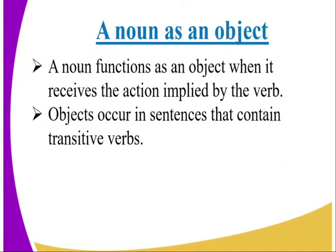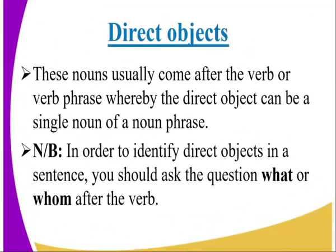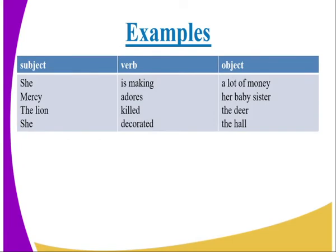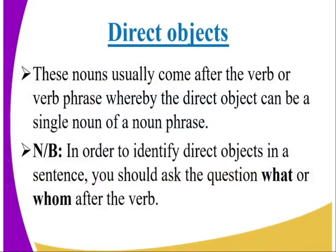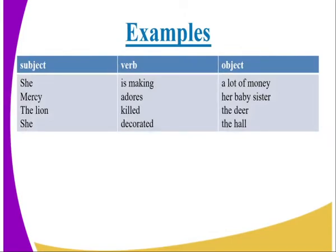A noun functions as an object when it receives the action implied by the verb. Objects occur in sentences that contain transitive verbs. Types of objects: we have the direct and the indirect object. Direct objects come after the verb or verb phrase, and can be a single noun or a noun phrase. To identify direct objects, ask 'what' or 'whom' after the verb. Example: She is making a lot of money — 'a lot of money' is the direct object. Mercy adores her baby sister — 'her baby sister' is the direct object.